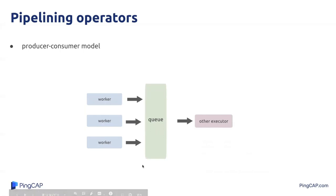Now let's focus on the pipeline operator cases. The SQL engine uses table scan or index scan to fetch data from the storage layer. The fetch process can be abstracted to the producer-consumer model. The producer fetches chunks of data from the storage and puts them into a queue. The consumer fetches the data from the queue and consumes it. For a table scan or an index scan, there will be multiple producers but only one consumer. Obviously, if the consumer is slower than the producers, a lot of data will be buffered in the queue and OOM may happen.